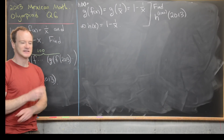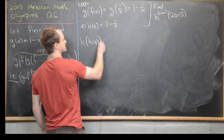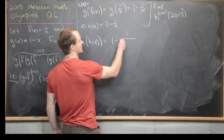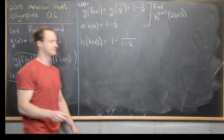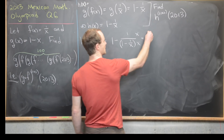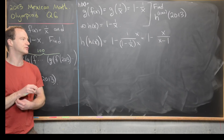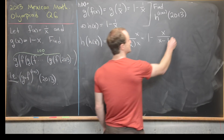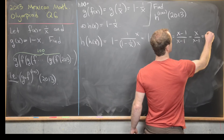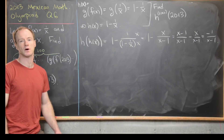Let's compose h with itself several times to find a pattern. Computing h∘h(x): that's 1 - 1/(1 - 1/x). Multiplying numerator and denominator by x gives 1 - x/(x-1). Finding a common denominator: (x-1)/(x-1) - x/(x-1) = -1/(x-1). So h composed with itself twice is -1/(x-1).